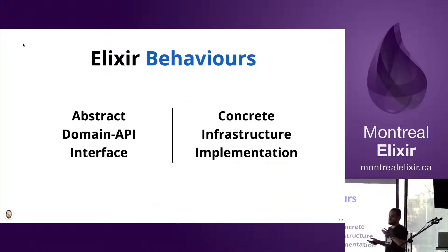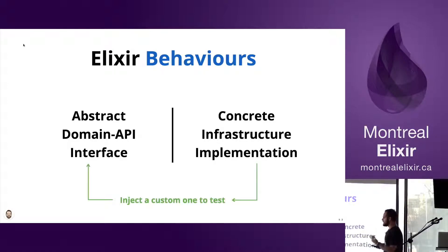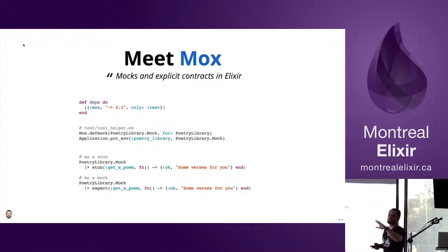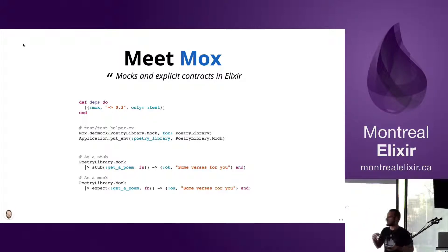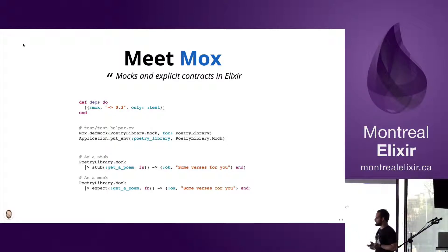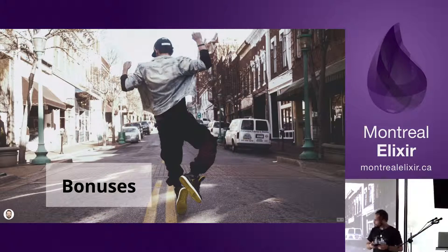I discovered that Elixir has behaviors, which separate the abstract domain interfaces from the concrete implementation (the infrastructure). The key idea is to provide a custom implementation for tests and inject it so we can test easily. There is even a dependency for that called Mox — it's a nice dependency to help you do this. From a behavior interface, you can implement a fake or mock implementation to use in your tests.